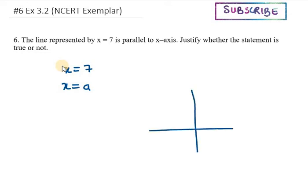Let's see how. If I make an x-y graph here and mark 7 on this axis: 1, 2, 3, 4, 5, 6, and 7. This is the 7th point.